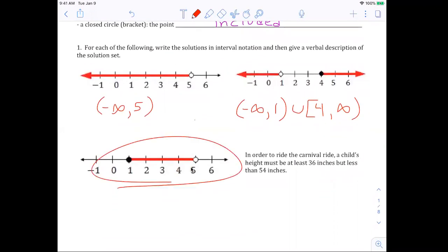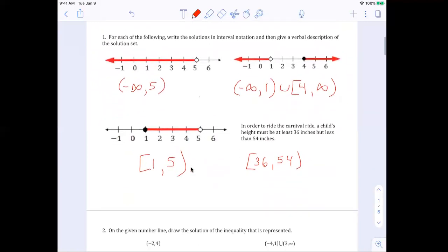All right. In the bottom left, we want to express this in interval notation. So it is inclusive of one to five exclusive. And in the bottom right, it says in order to ride the carnival, a child's height must be at least 36 inches. So it could be 36 and above, but less than 54. So not equal to 54, but less than. So that means it would be inclusive of 36 to 54 exclusive.